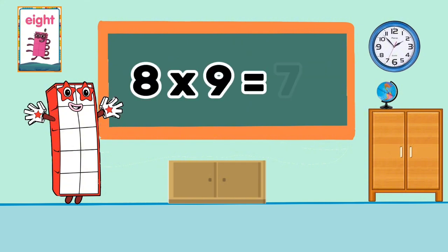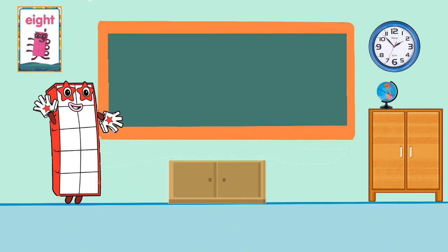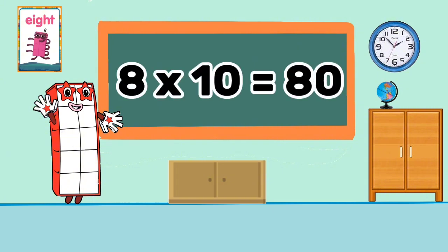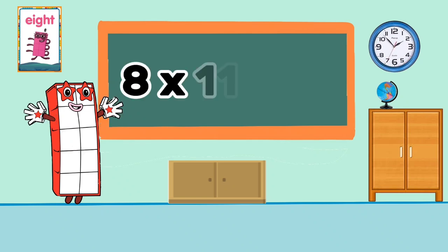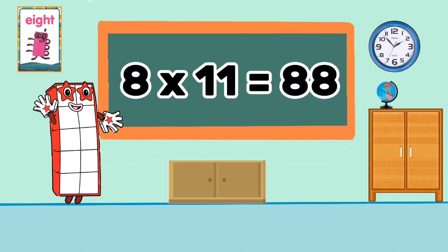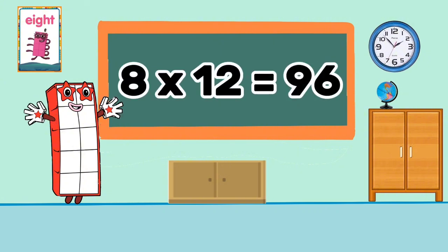8 times 9 equals 72. 8 times 10 equals 80. 8 times 11 equals 88. 8 times 12 equals 96.